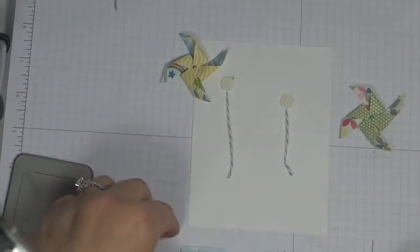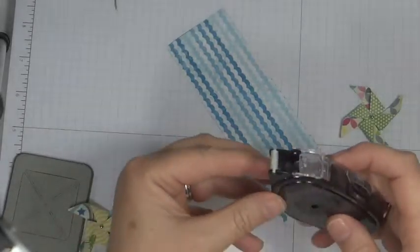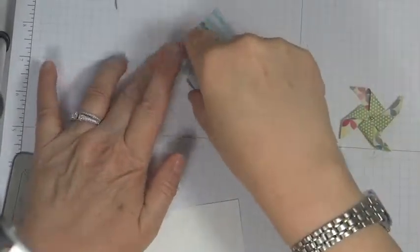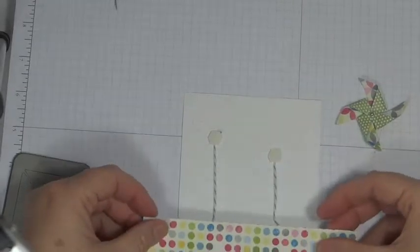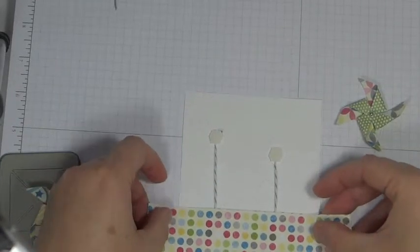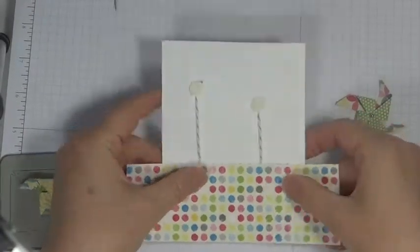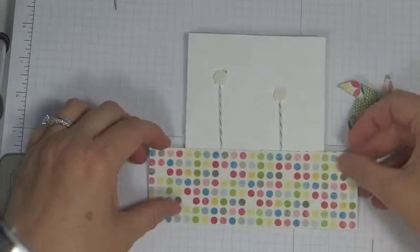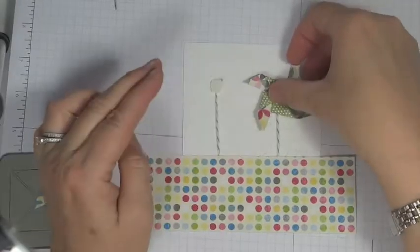And what I found that held it best was I took a dimensional and I just stuck it on the twine about where I wanted the pinwheel to be. And now at this point I'm going to put some snail on my two inch piece and then I'm going to lay that and the snail's going to hold those pieces down.